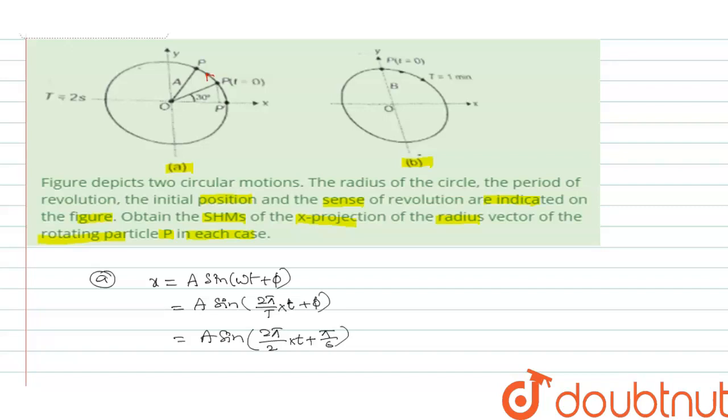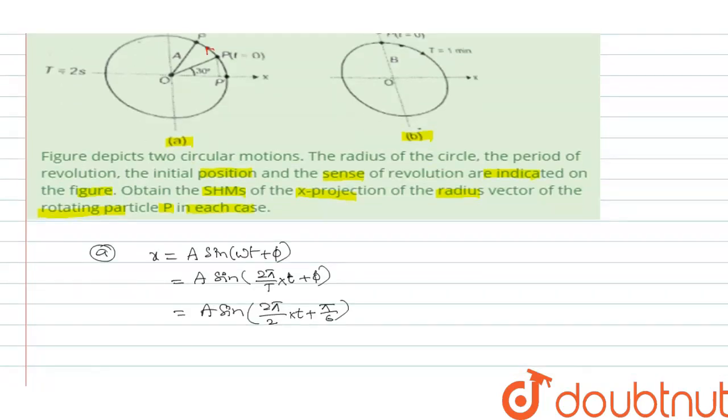So this will become how much here? A sine of, so 2 to get cancelled, pi into t plus phi by 6. So this is the expression for the means SHM for the given diagram. Okay, given particle.